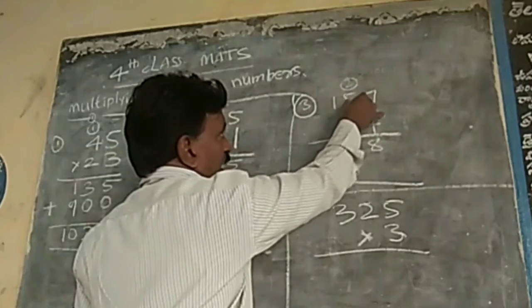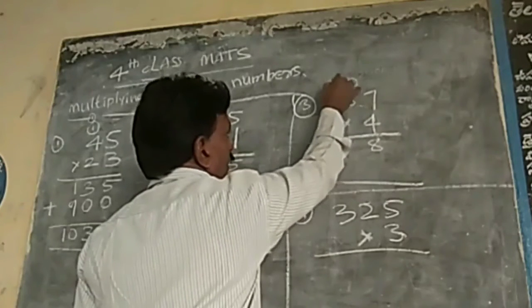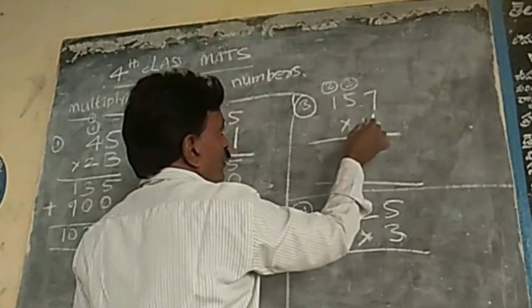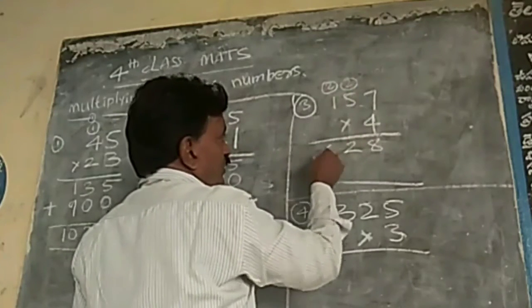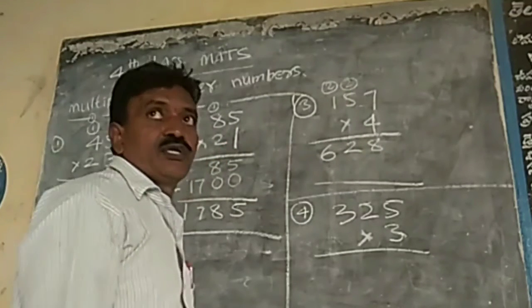One split. 4, 5, yeah. 20. 20 plus 2. 22. 2. 2. 4. 4. 4 plus 2. 6. How much? 628.